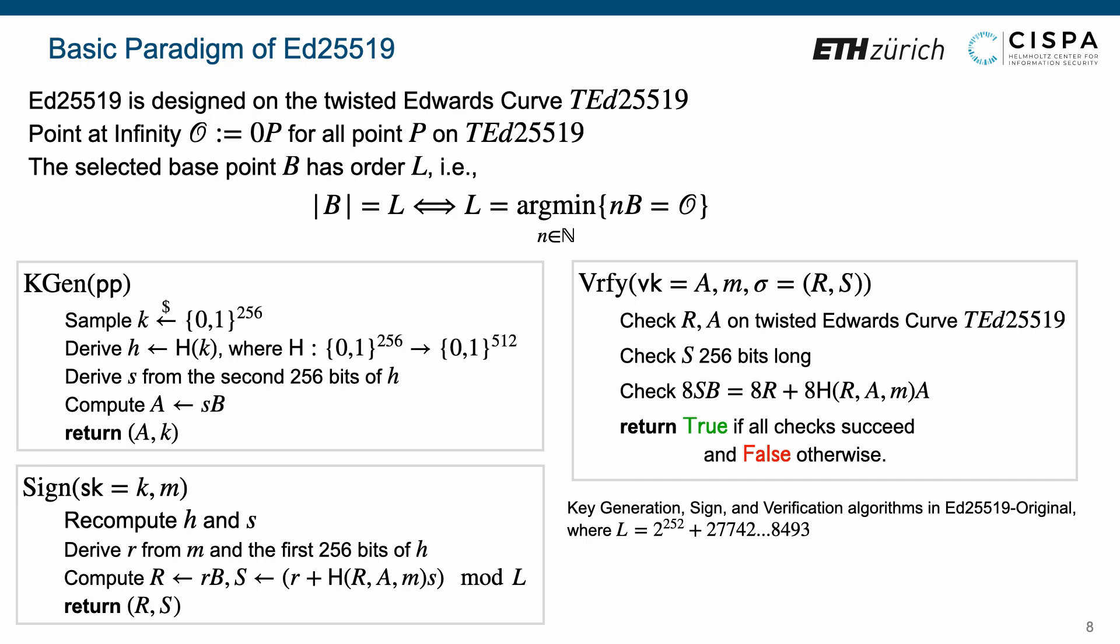Then, it derives S from the second 256 bits of H and computes A equals SB. Here, this value A is the verification key and the sampled key is the signing key.